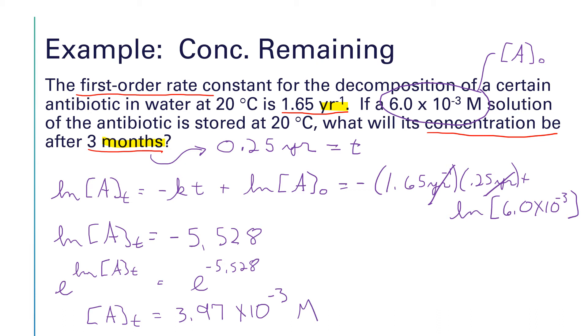So after three months, the concentration of this solution will have dropped from 6.0 times 10 to the minus 3 molar down to 3.97 times 10 to the minus 3 molar. And to keep good with significant figures, I probably should only keep two sig figs on that. So that would round to 4.0 times 10 to the minus 3 molar.